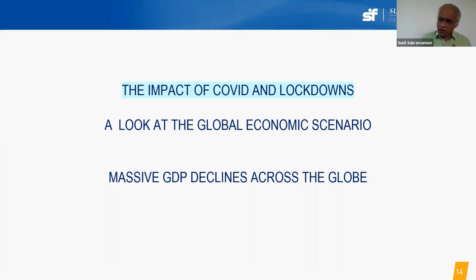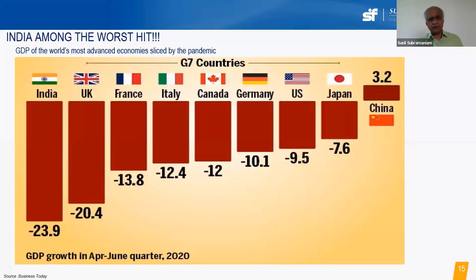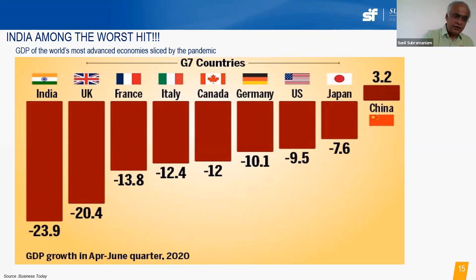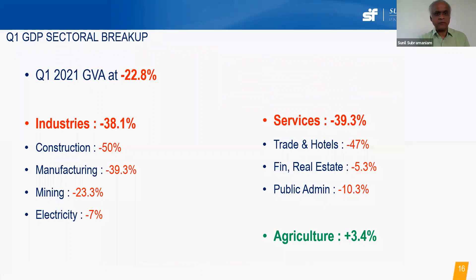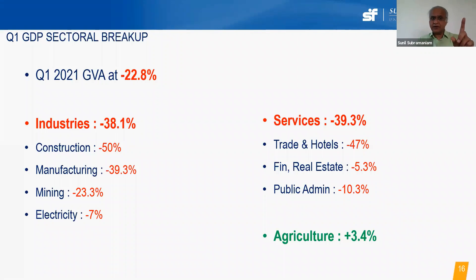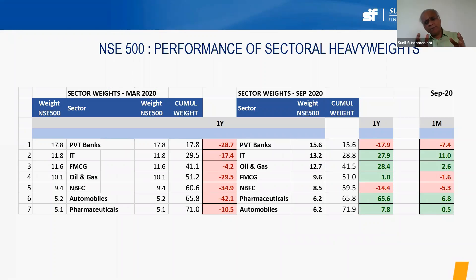India is among the worst in global GDP performance. Looking at India's sectoral breakup, GVA is down 23%, industry was badly hit at 38-39%, but since we protected rural India from initial contagion, agriculture posted positive growth of 3.5%. Coming to sectoral performances in the NSE 500, which has about 20-25 sectors, I've chosen those that make an impact on the stock market for this discussion.